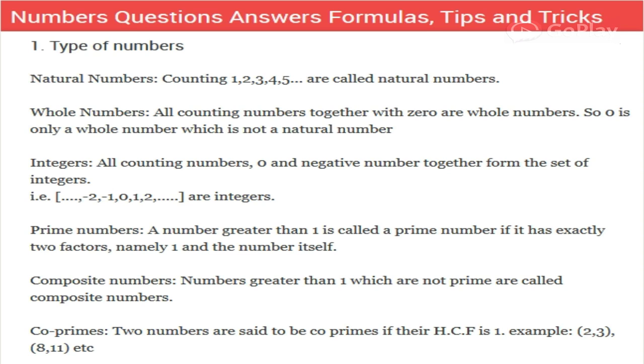Let's start with types of numbers. First, natural numbers. What are natural numbers? Every number starting from one is a natural number: one, two, three, four, five, and so on. These all are natural numbers.